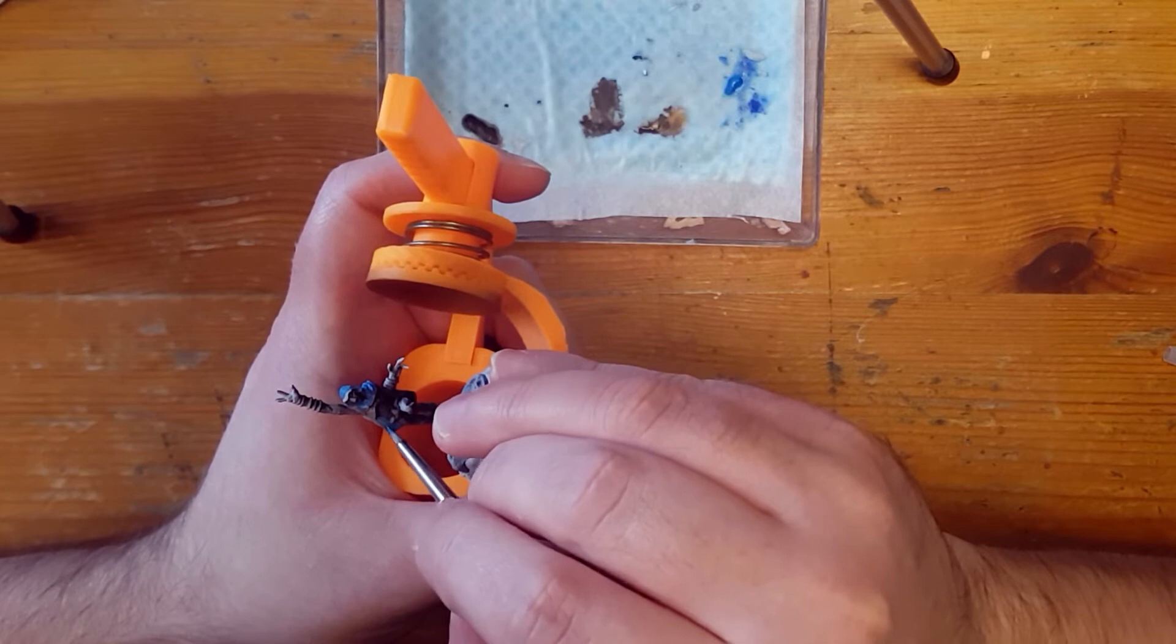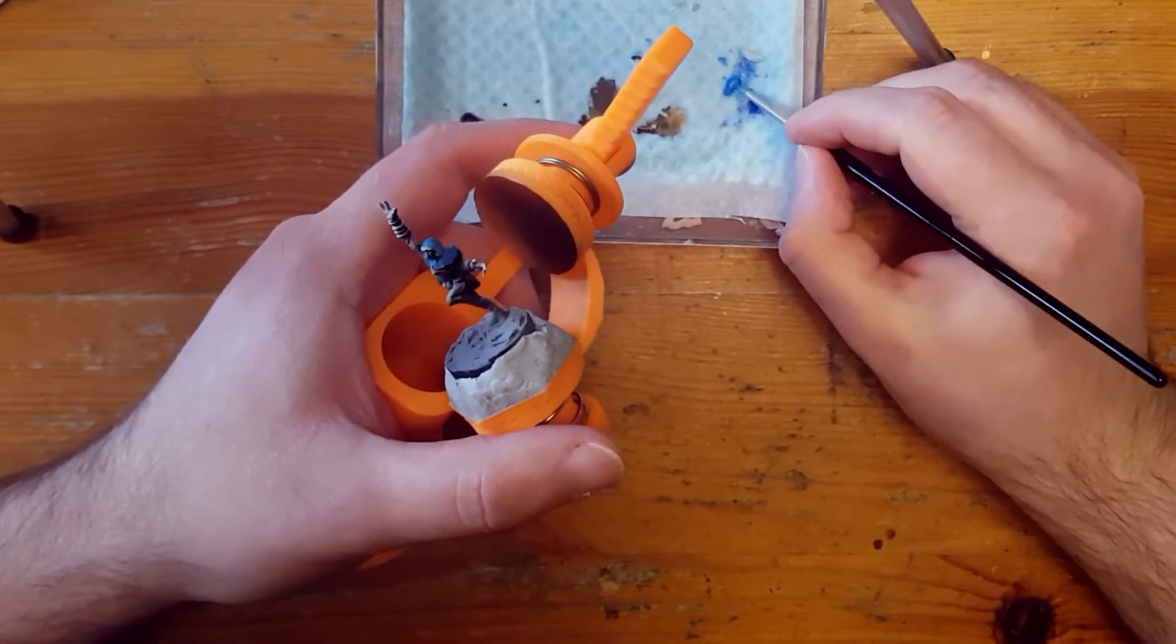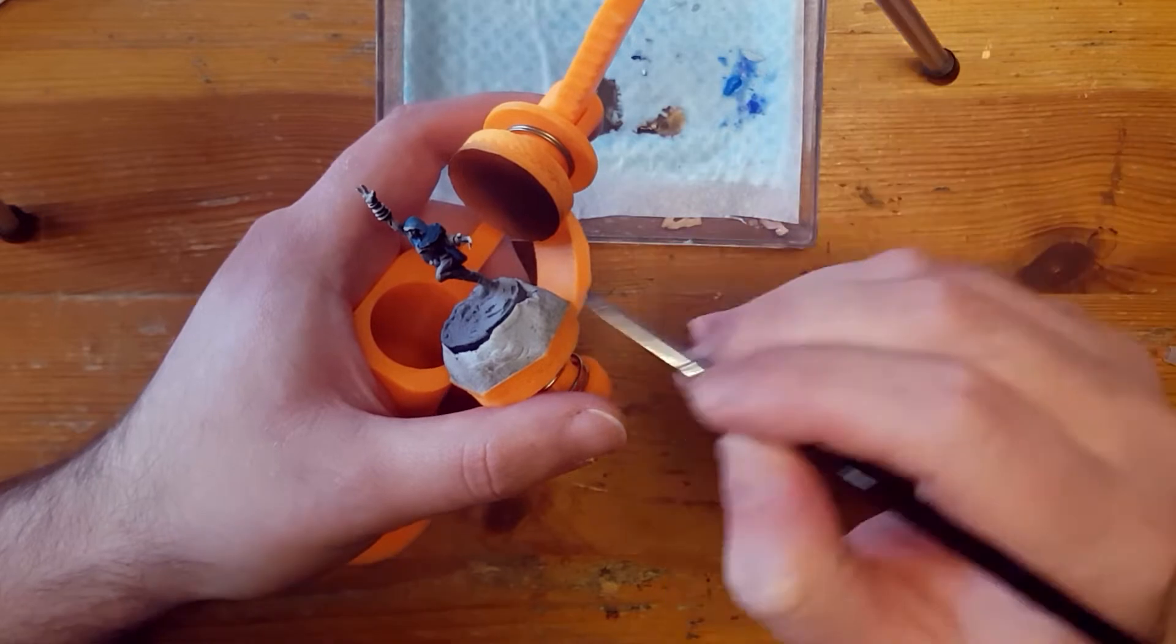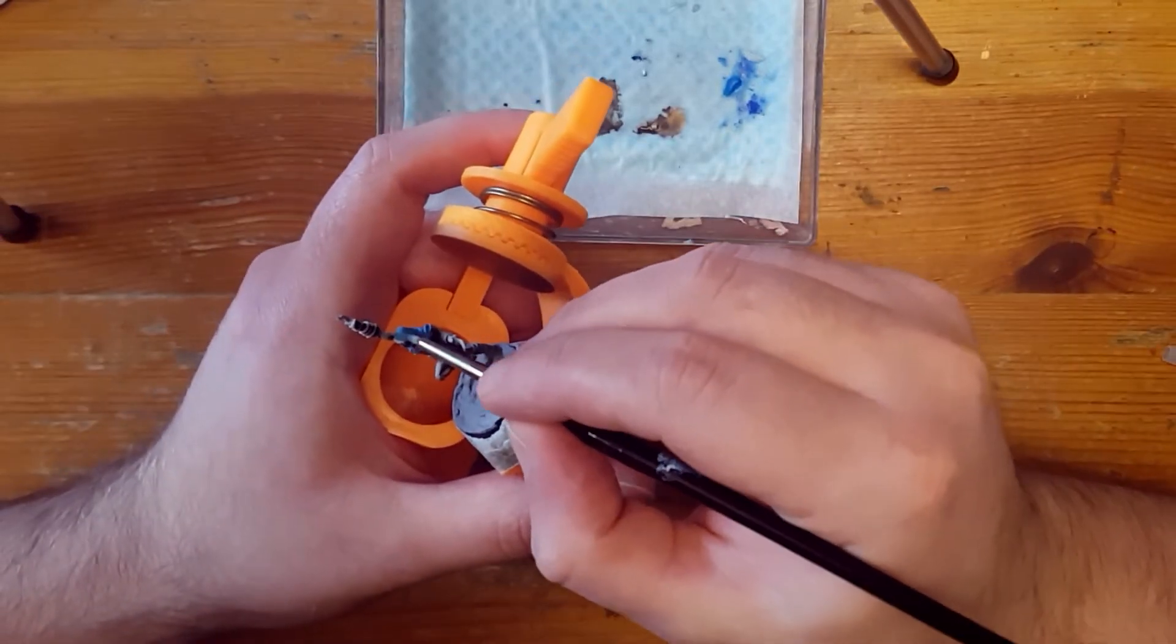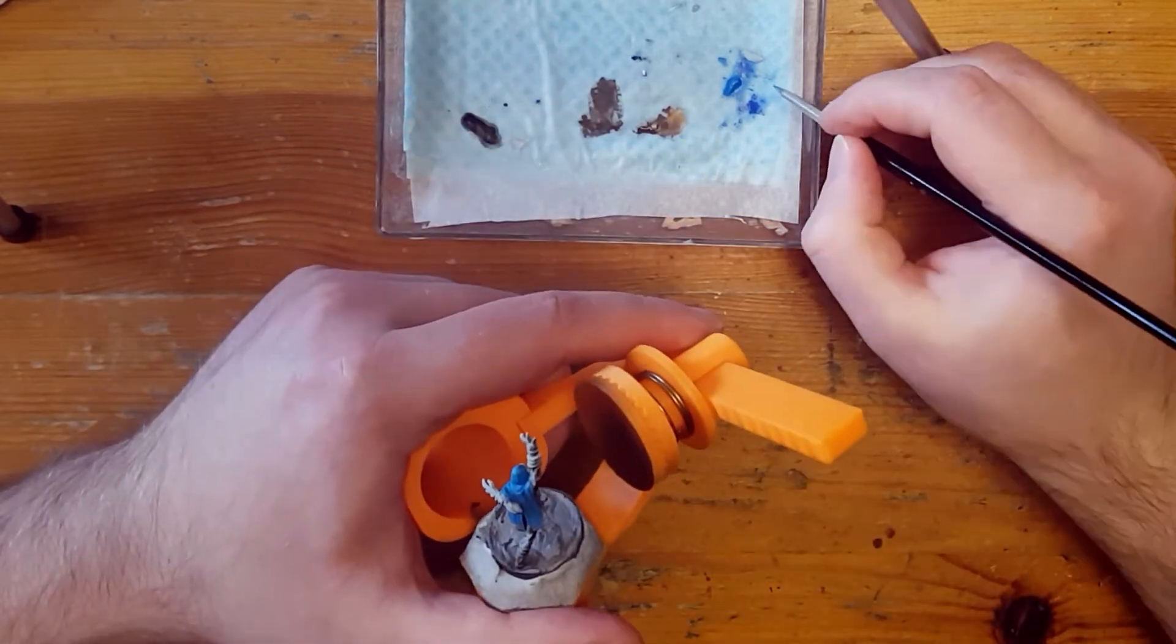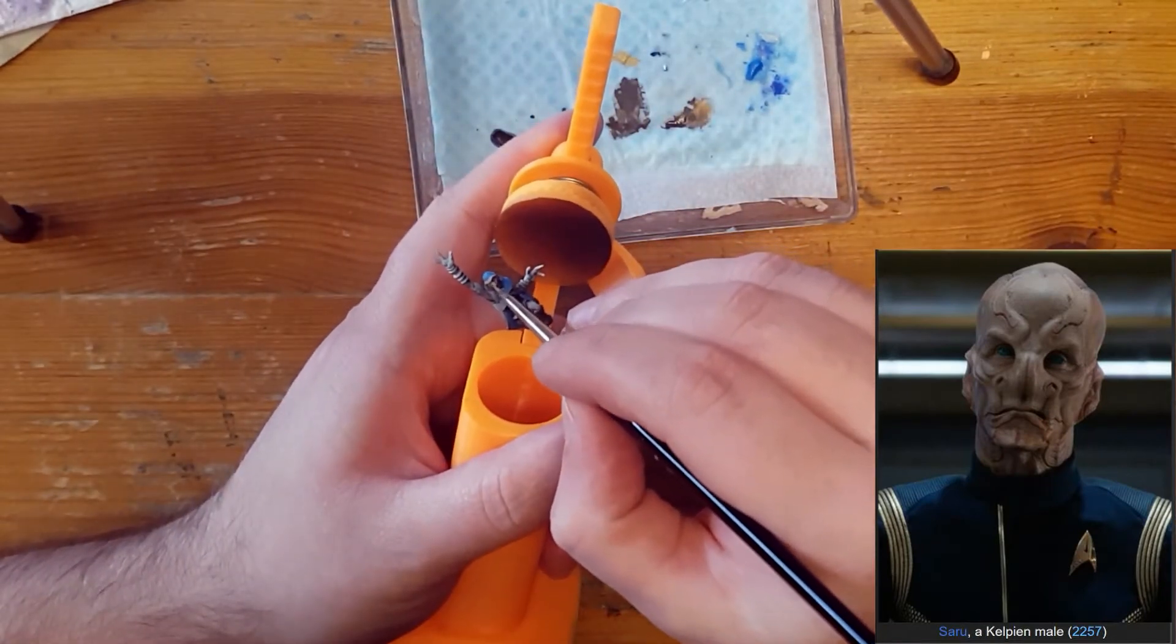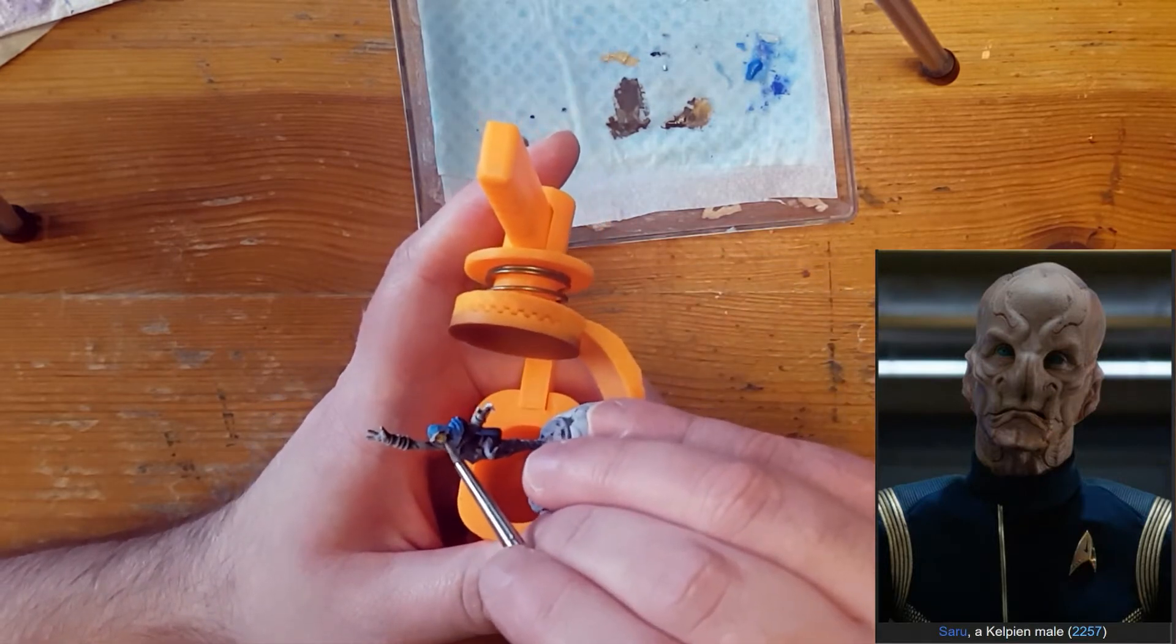And so I went off and did some research, which is the first time I've ever done that. And I started by looking up some pictures of Kelpien's. And Memory Alpha proved to be a valuable resource as it is intended to be. And I found several pictures of Saru and some other Kelpien's as well. I wanted to pay particular attention to the skin tones, which aren't quite a Caucasian human skin tone but are more of a flat tan colour. However there's quite a lot of red in the shadows.